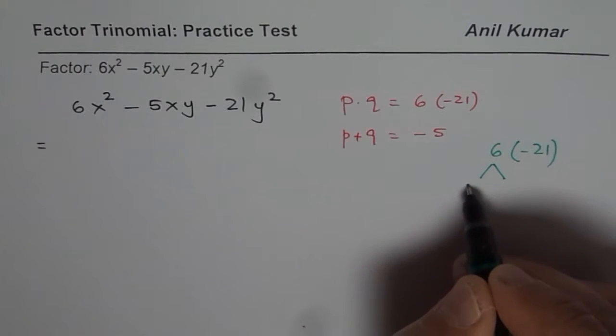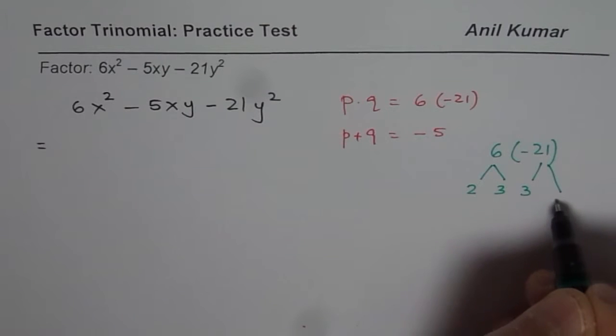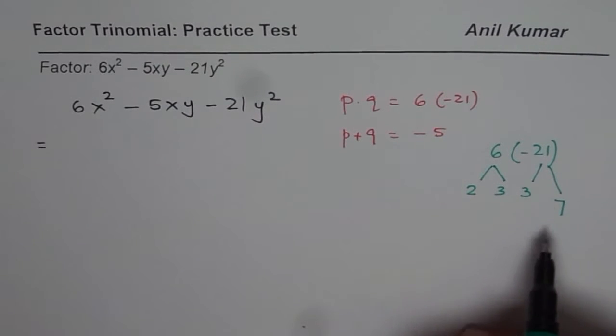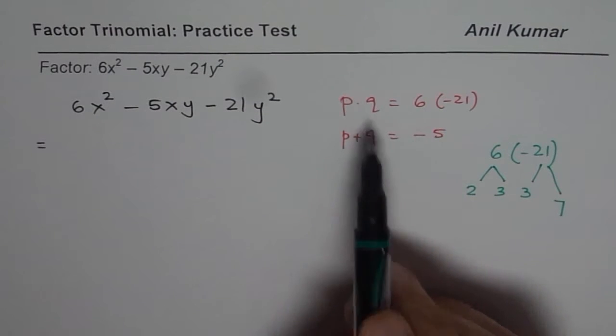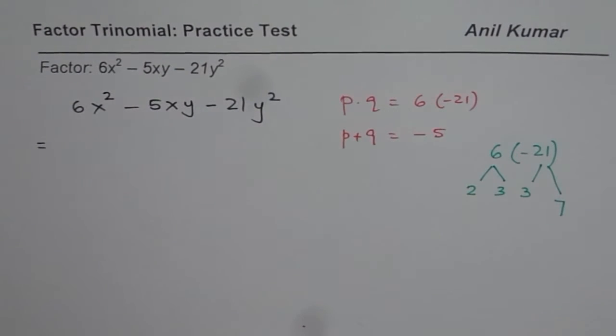So let's begin by writing down the factors. Factors of 6 are 2 and 3. Factors of 21 are 3 and 7. Now somehow, when you multiply these, we will always get the product right. But we need to get a combination which when added or subtracted will give us -5.